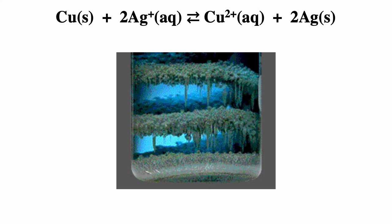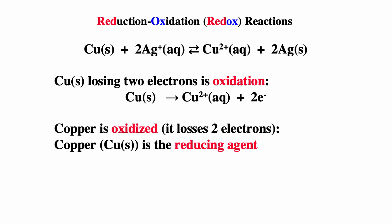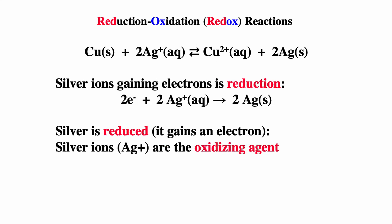The silver ions want the electrons more than the copper ions do. The copper is being oxidized — each copper atom is losing two electrons, forming a copper two plus. So the copper is oxidized and it's the reducing agent. Each silver ion is gaining a single electron, so the silver ions are being reduced and are the oxidizing agent.